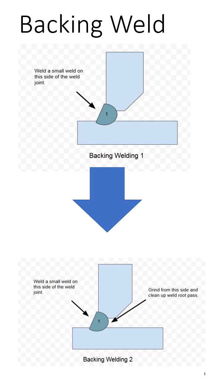All right, today we're going to talk about the difference between a backing weld and a back weld. With a backing weld, we put in a small weld, and you can see the arrows there indicating we're going to put a small weld in on this side. Then on the bottom picture showing backing weld 2...